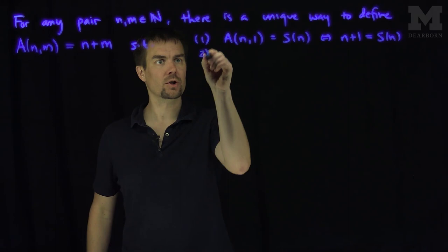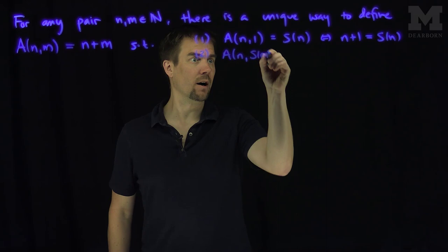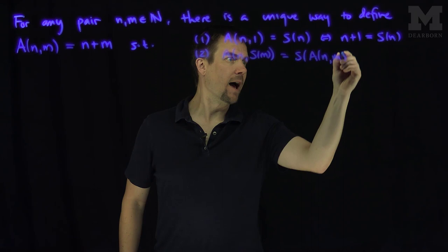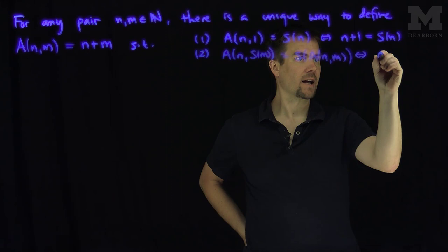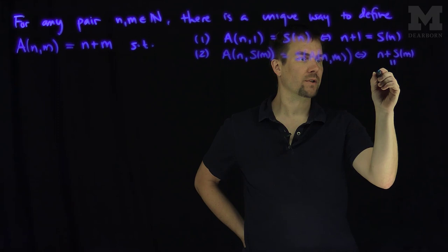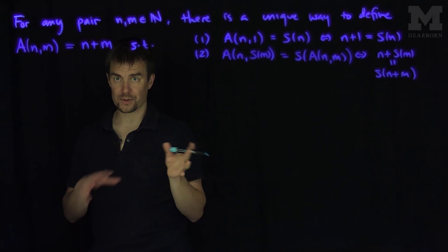The second property is that A(n, S(m)) will be the successor of A(n,m). In our other notation, this says that n plus S(m) should be equal to S(n plus m). So that gives us a functional relationship between the successor and this addition operation.